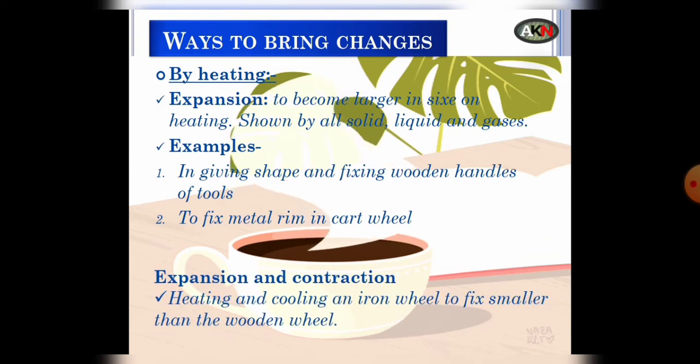Expansion and contraction: this process is used to fit a rim on a wheel. Here in this picture you can see a wheel and various tools are mentioned. Now one question is there: have you ever seen how iron tools are fixed in wooden handles?